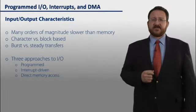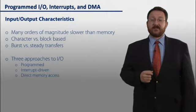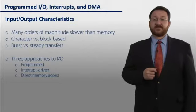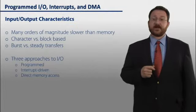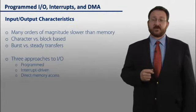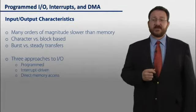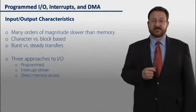The characteristics of input and output are that it is several orders of magnitude slower than accessing memory. And as we saw previously, accessing memory is several orders of magnitude slower than the CPU itself. So this is particularly slow for getting access to.